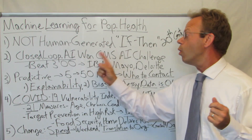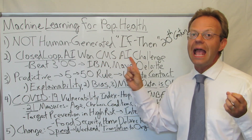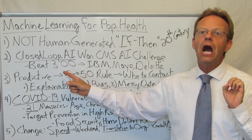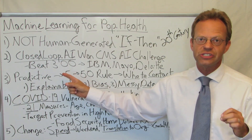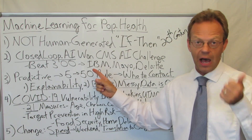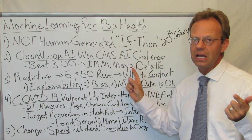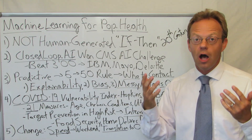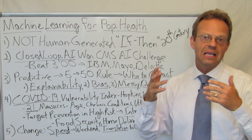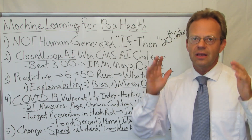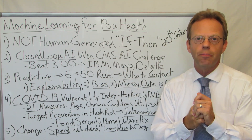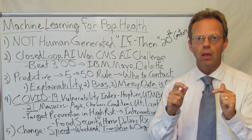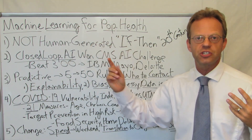Guess what it did? It won the CMS AI challenge. That's how good these people are. They beat out 300 other organizations in this CMS challenge, including the likes of IBM, the Mayo Clinic, and Deloitte. It has the former CIO of Humana and an MIT computer science person who used to work on the Human Genome Project. These people know what they're doing, and they have articulated very well how to apply machine learning to population health.